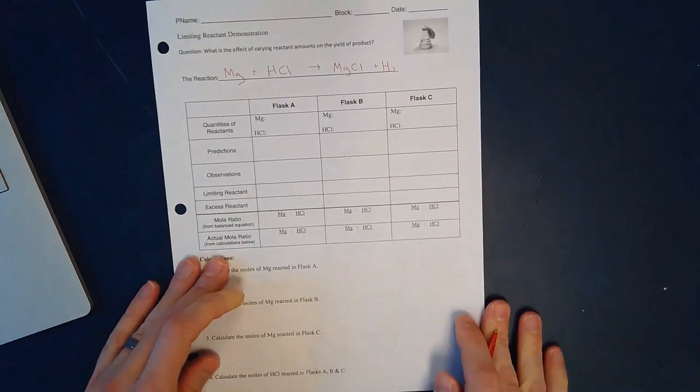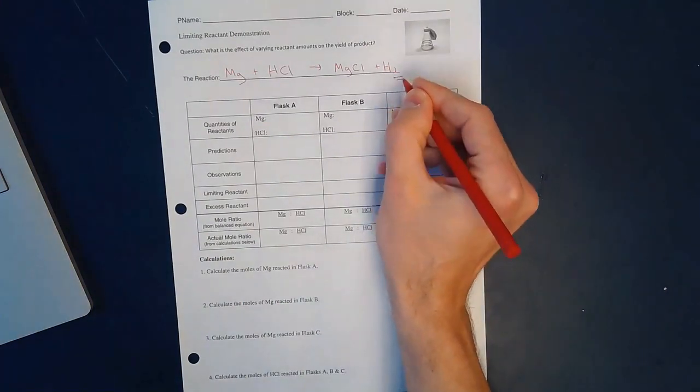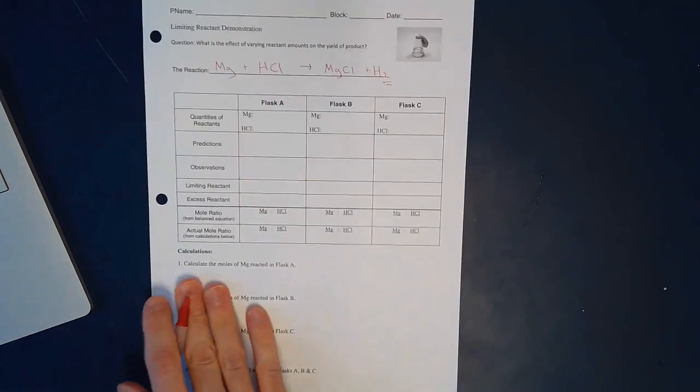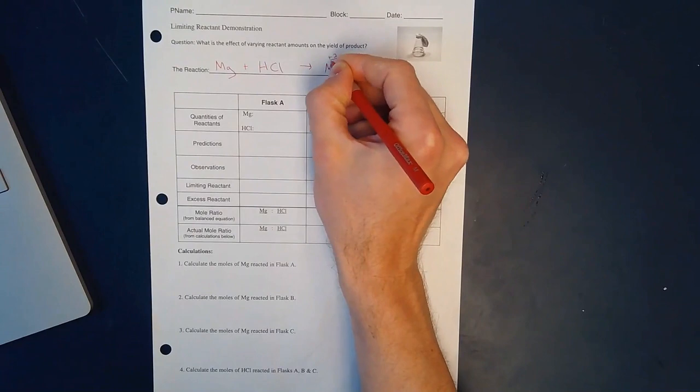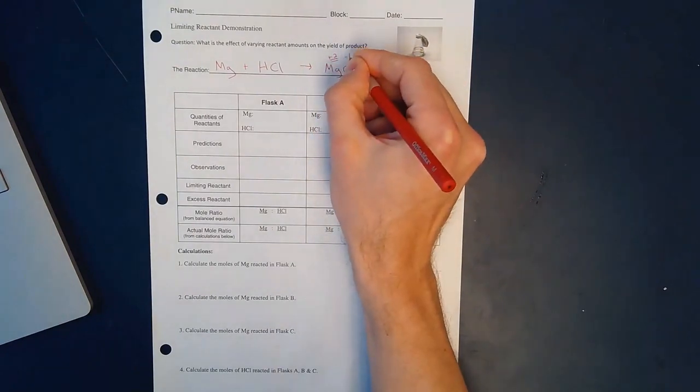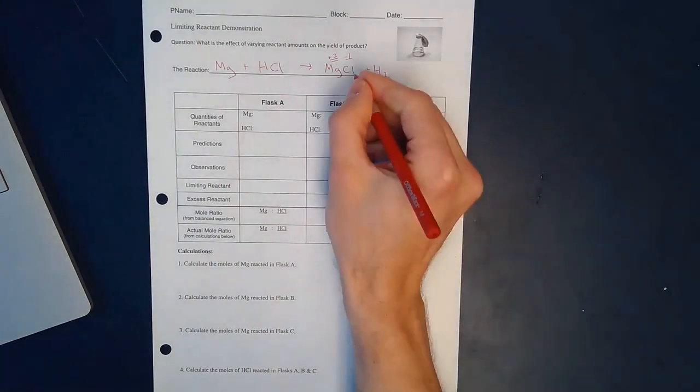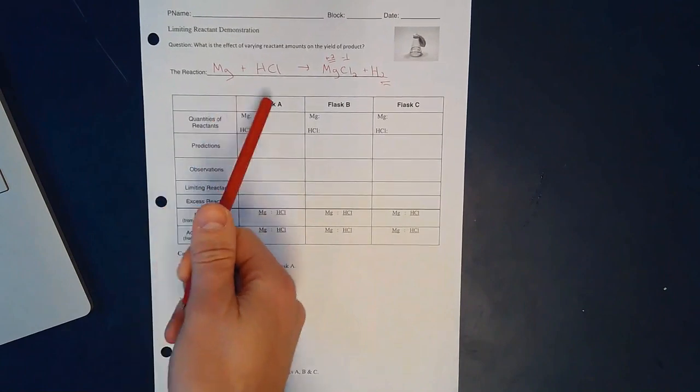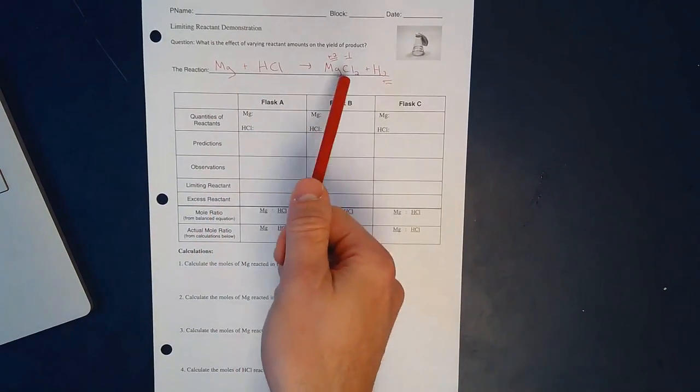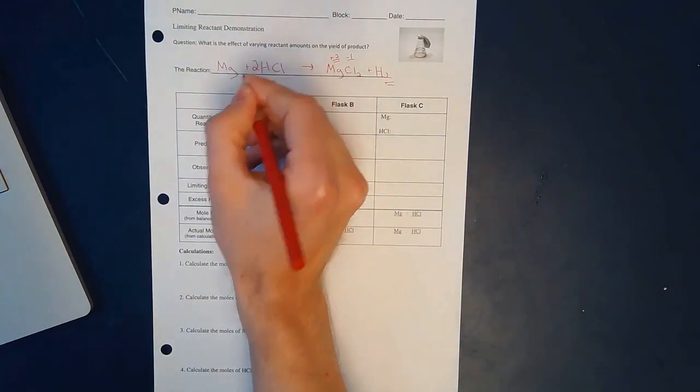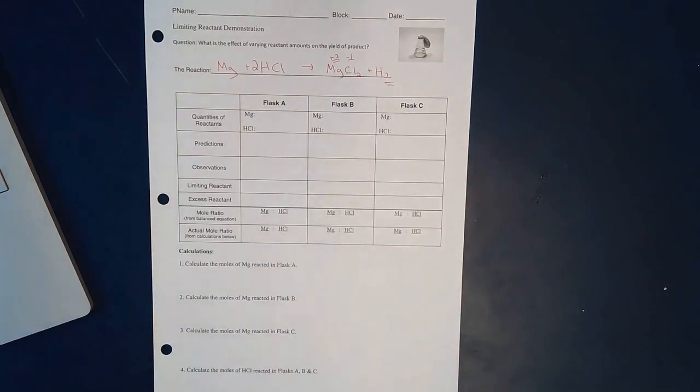However, we have a couple things we have to worry about. First of all, that's H2. Hydrogen gas is always H2. And magnesium makes a plus 2 charge. So whenever we make a new ionic compound, magnesium with its plus 2 charge and chloride with its minus 1 charge have to be balanced out. So how many chlorines would I need to balance out a magnesium? I would need 2. Now really quickly, we're going to balance this. I see I need 2 chlorines on this side and 2 hydrogens on this side, and that's the balanced equation.